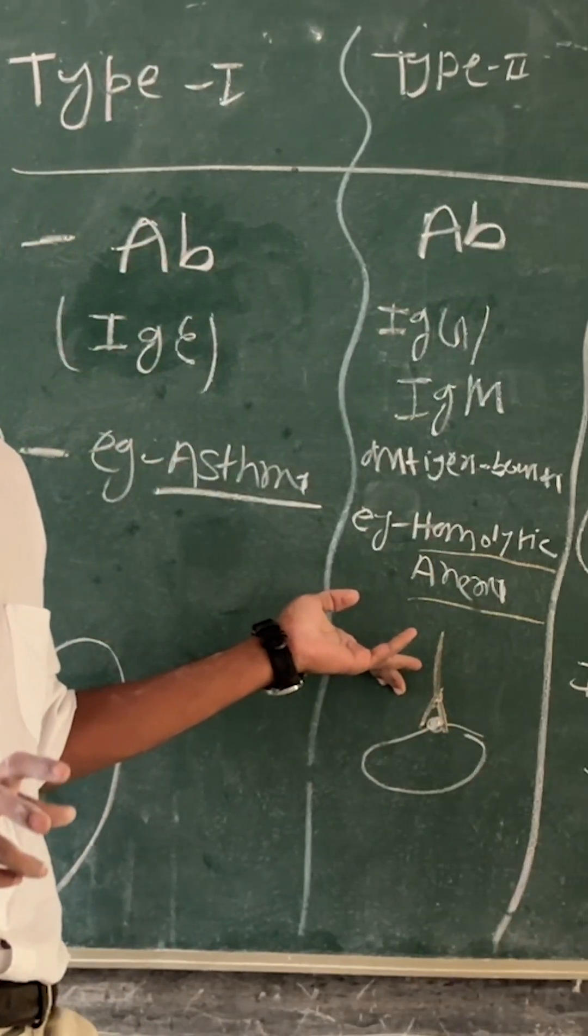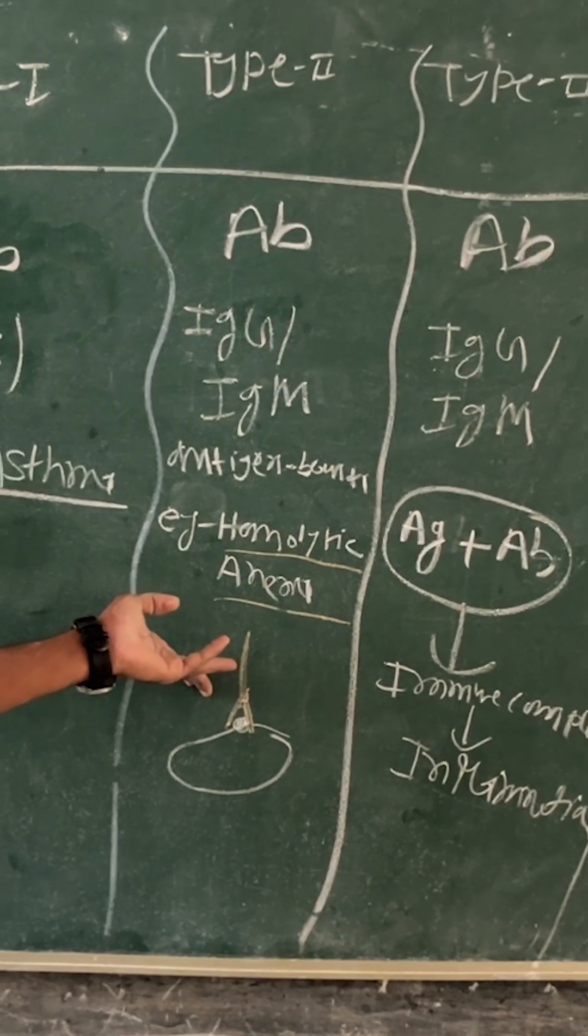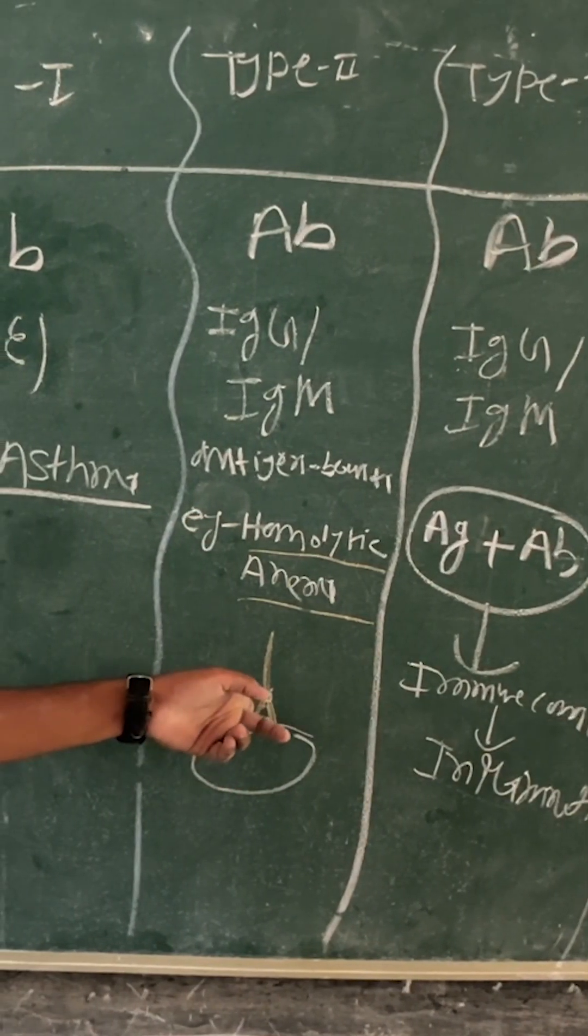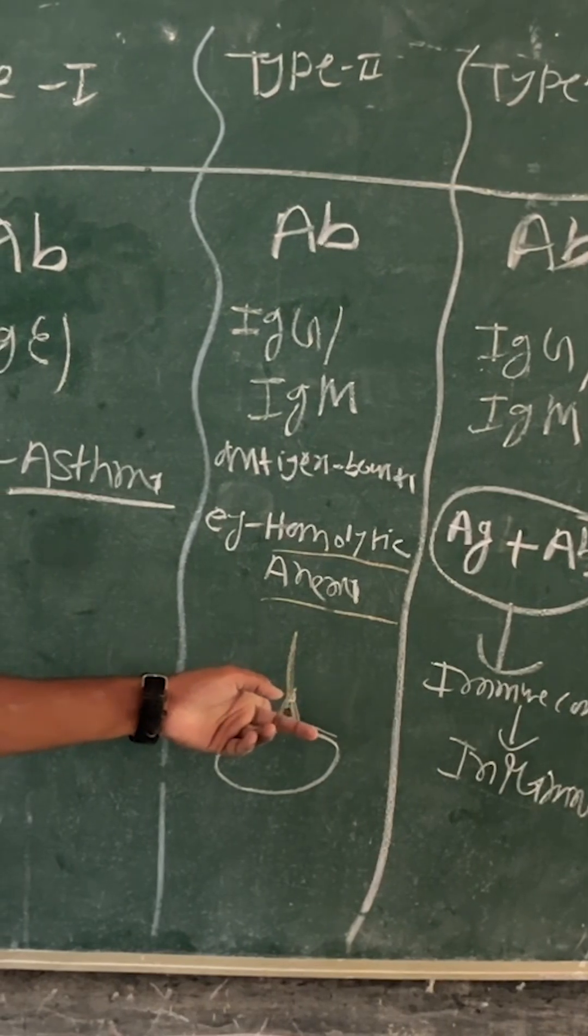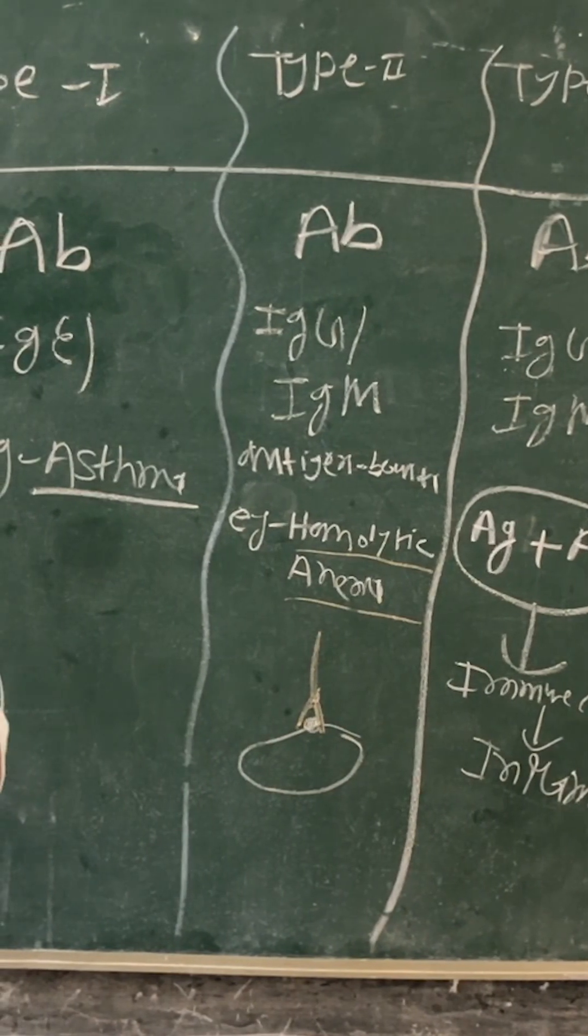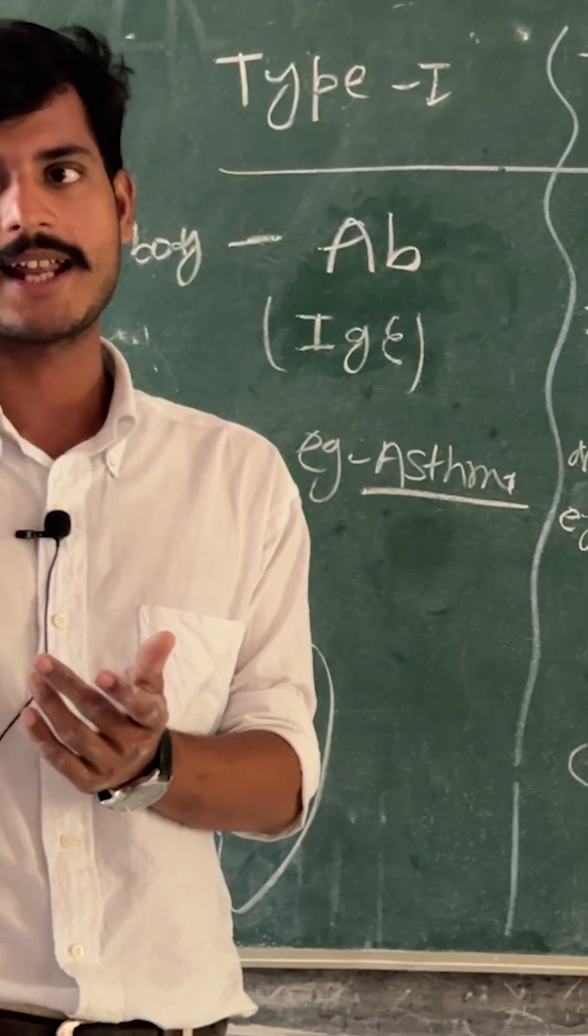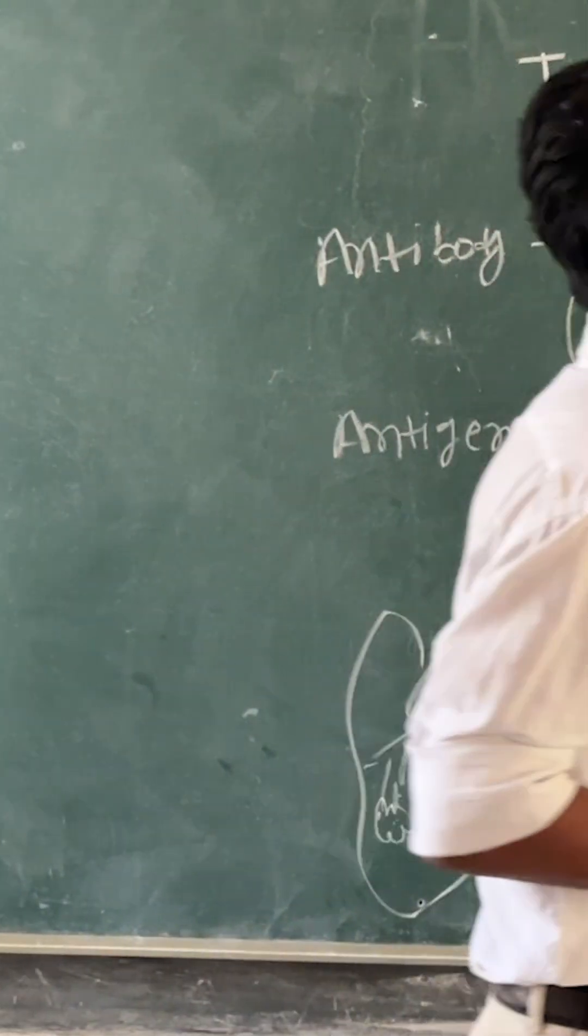Our membrane, if it has some antigens, then antibody binds over there and causes their lysis or destruction. Examples are hemolytic anemia and erythroblastosis fetalis.